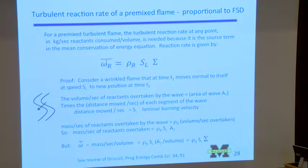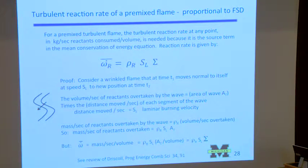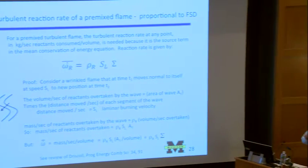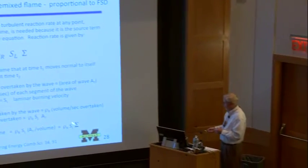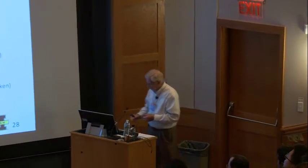If you take a piece of paper and hold it out flat, it has a certain area and doesn't fill up much volume. But if you wrinkle it up like a fractal, you have a totally different surface area per unit volume. The more you compress it, the more surface area you have in the volume. Sigma is a measure of that.